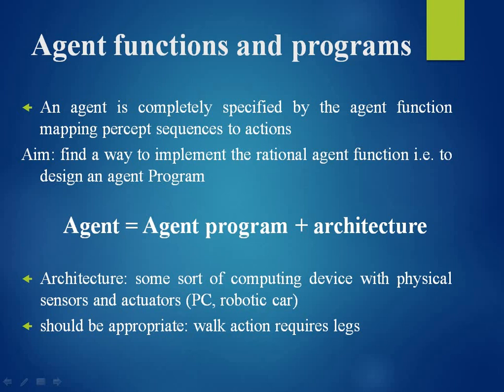An agent is completely specified by the agent function mapping percept sequences to actions. The job of artificial intelligence is to design an agent program that implements the agent function. This program runs on a computing device with physical sensors and actuators, known as the architecture. So, an agent is nothing but the agent program plus architecture.